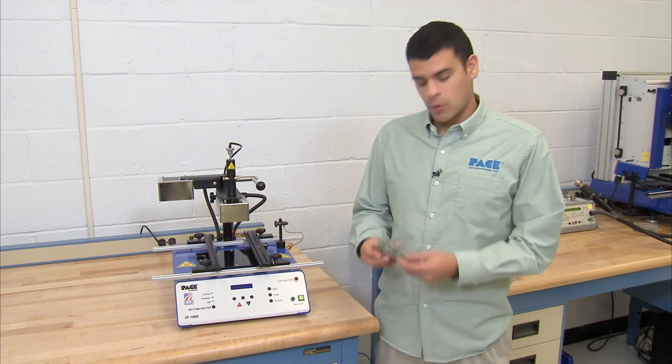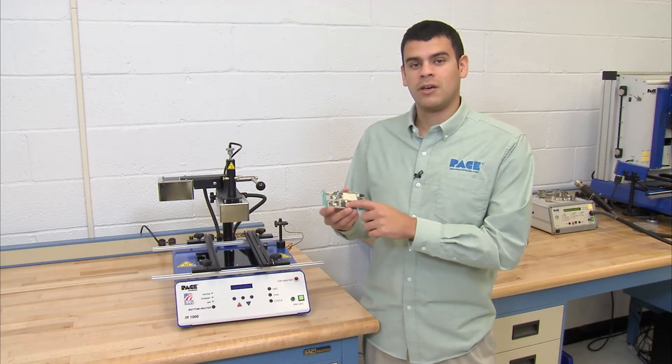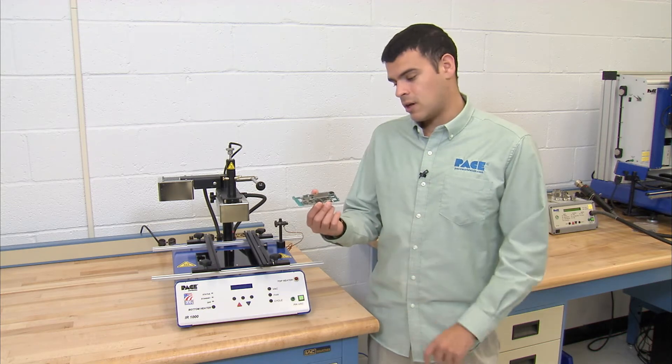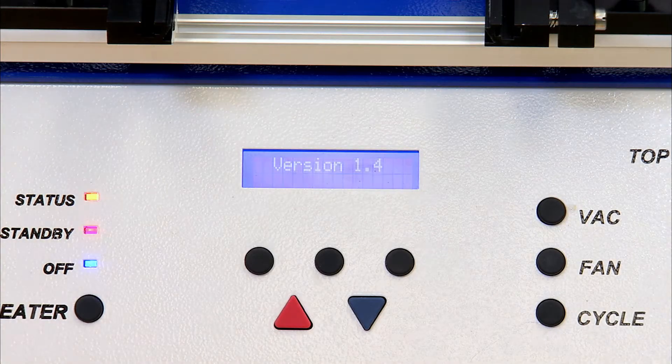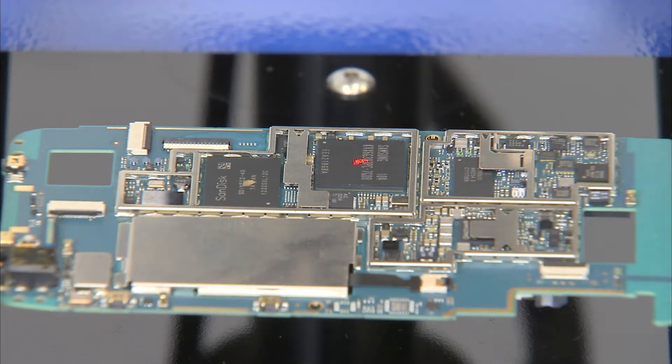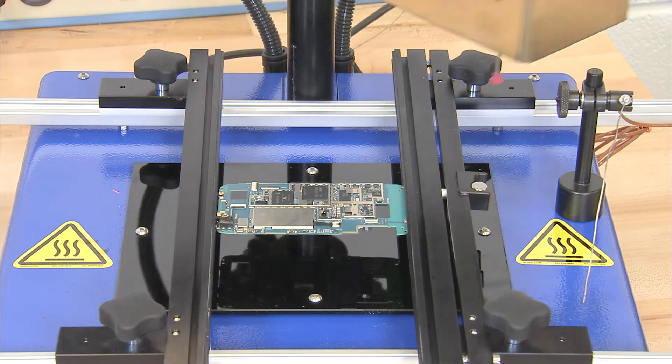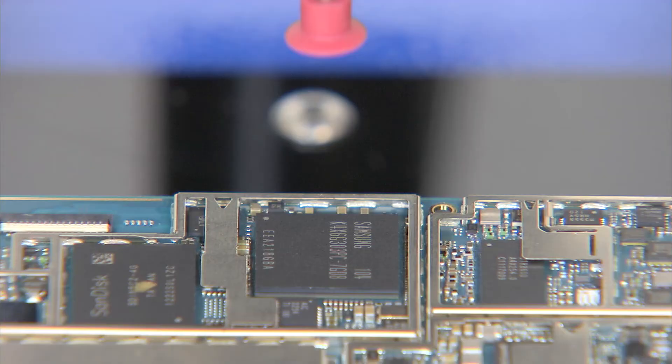Right now I'm going to show you how to remove this BGA component off of this Galaxy S4 circuit board. First, we want to turn on the machine and align the component underneath the laser dot. When centered, the vacuum pick will align exactly to where the red dot was.